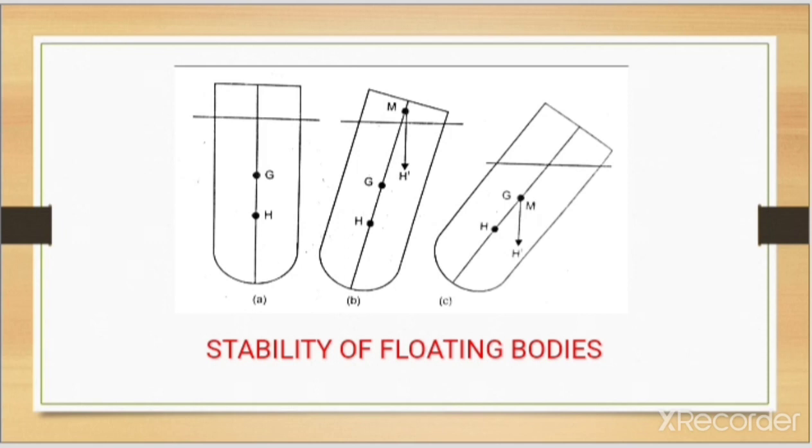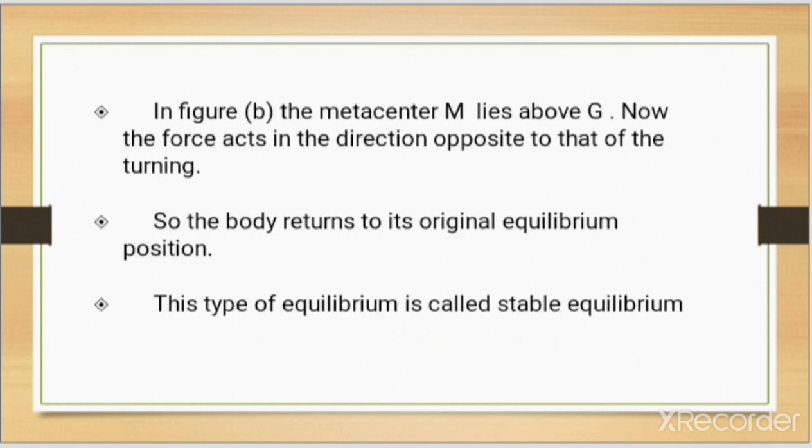In figure B, the metacenter M lies above G. Now the force acts in the direction opposite to that of the turning. So the body returns to its original equilibrium position. This type of equilibrium is called stable equilibrium.